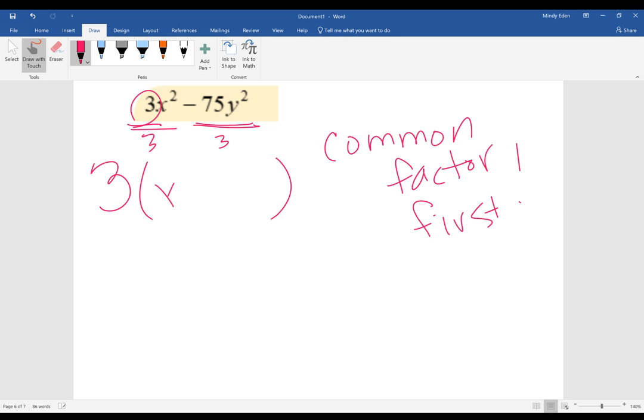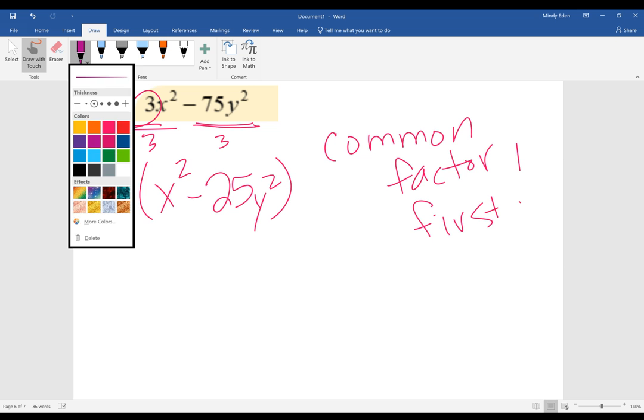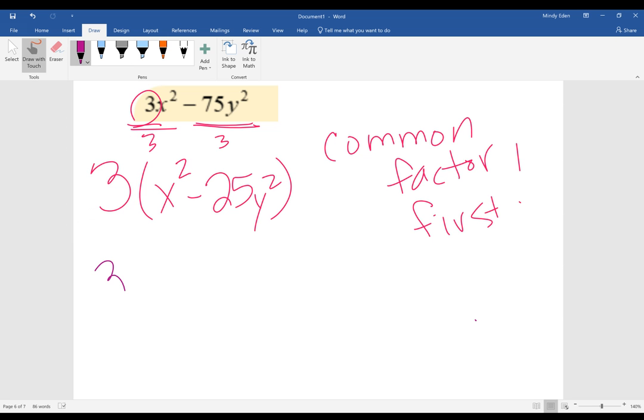So I would be left with x squared minus 25y squared. Now, if I look at what's left, I can leave the 3 alone, and these two are perfect squares, so I can factor it.